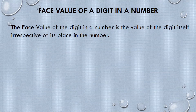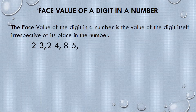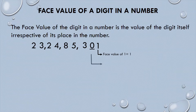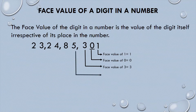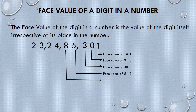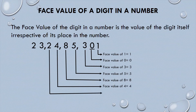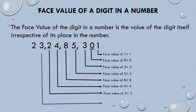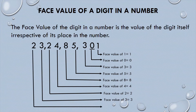The face value of a digit in a number is the value of the digit itself, irrespective of its place in the number. Let's take an example: 23 crore 24 lakh 85 301. The face value of 1 is 1, the face value of 0 is 0, the face value of 3 is 3, the face value of 5 is 5, the face value of 8 is 8, the face value of 4 is 4, the face value of 2 is 2, the face value of 3 is 3, and the face value of 2 again is 2.